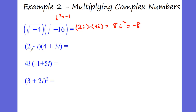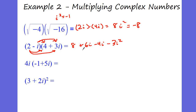Now this one, we have to do a little bit of foiling. First we're going to take 2 times 4, that's 8. Then we do 2 times 3i, that's 6i. Then we're going to do negative i times 4, that's negative 4i. And then negative i times 3i, that's negative 3i squared. This negative 3i squared — remember i squared is negative 1 — so this becomes positive 3. So 8 and the 3 add together to make 11. We add our imaginary numbers together and we get 2i, and it is in standard form.